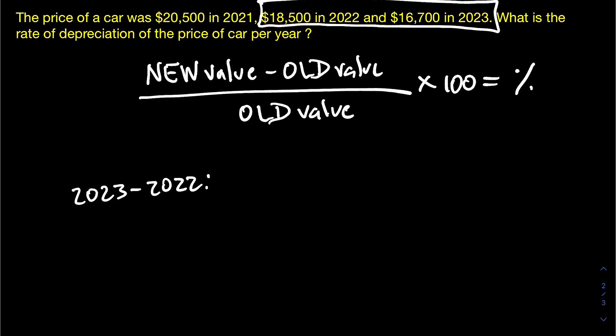So we would do this for the two separate years. First of all, let's look at 2023 to 2022. The price of the car in 2023 would be $16,700, and you would subtract that from the price of the car the year before. Divide by that same value, and then multiply by 100.